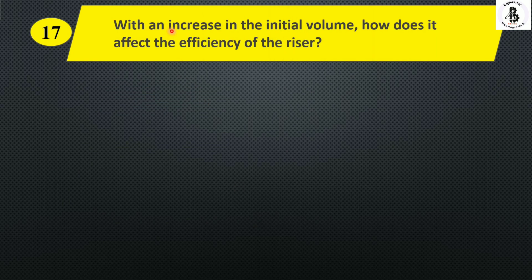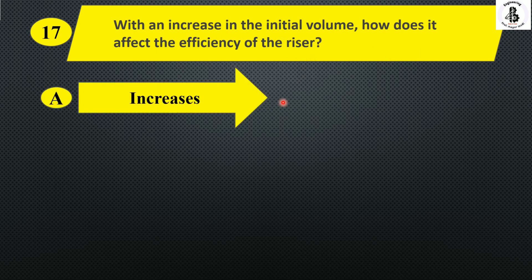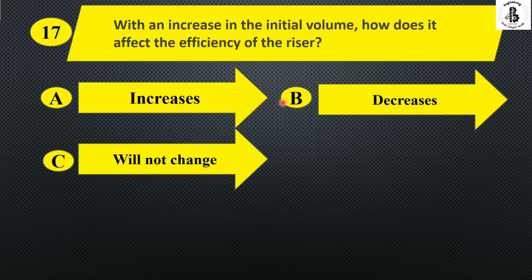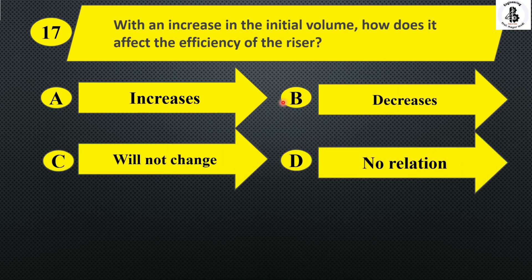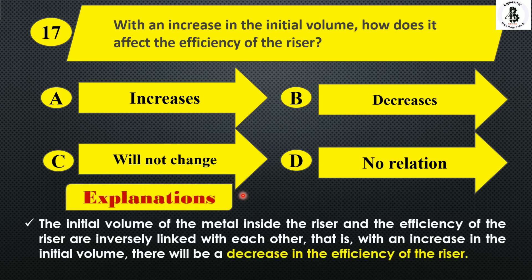Next: with an increase in the initial volume, how does it affect the efficiency of the riser? Option A increase, option B decrease, option C will not change, and option D not related. Basically, the initial volume of metal inside the riser and the efficiency of the riser are inversely linked. So with an increase in initial volume, there will be a decrease in riser efficiency. The right answer is option B, decreases.